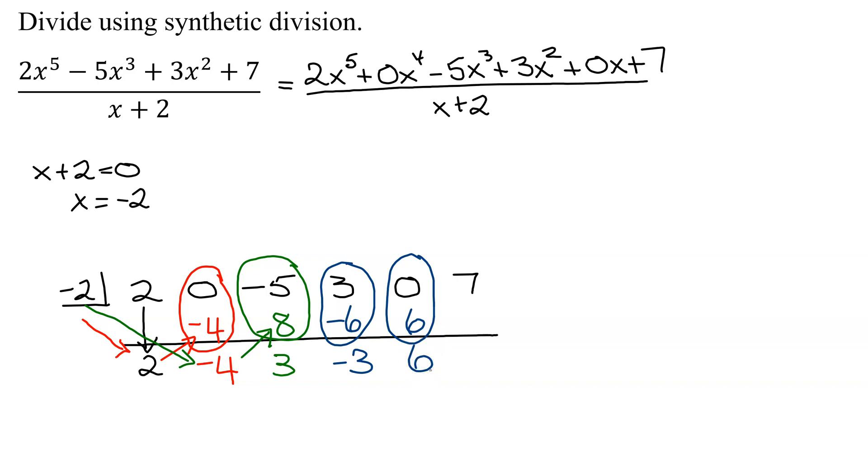Repeat the process again. Negative 2 times 6 is negative 12. Then add 7 and negative 12, you get negative 5.